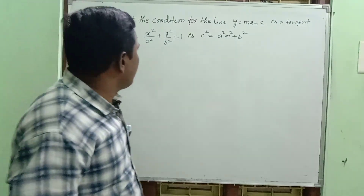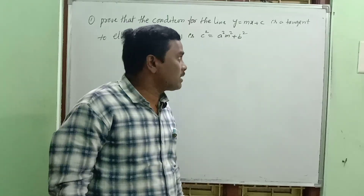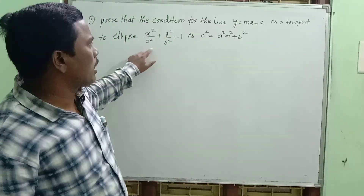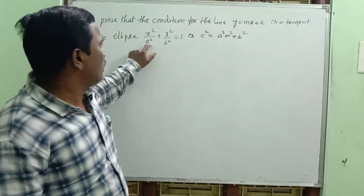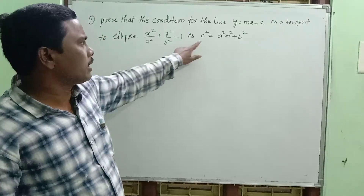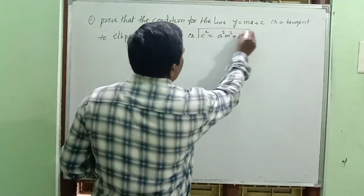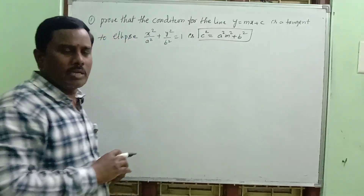Prove that the condition for the line y equal to mx plus c to be tangent to the ellipse is: c square equal to a square m square plus b square.